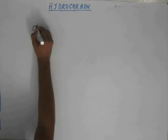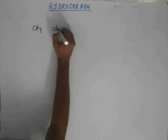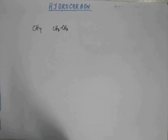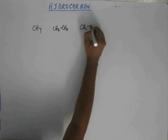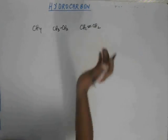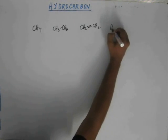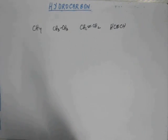For example, methane is made up of carbon and hydrogen, CH4. Ethane is C2H6, a hydrocarbon. Similarly, ethene C2H4 is also a hydrocarbon because it is made up of hydrogen and carbon. Similarly, acetylene is also made up of only hydrogen and carbon, so it is also a hydrocarbon.